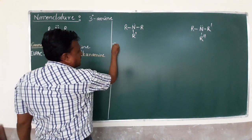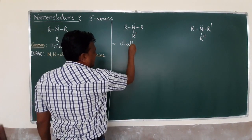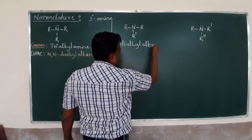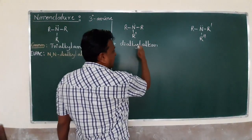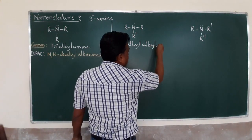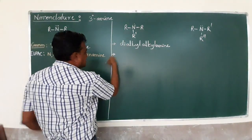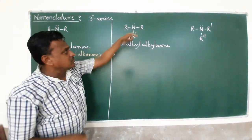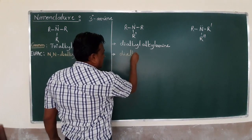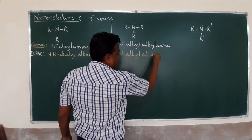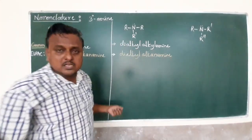When two alkyl groups are the same and one is different, the common name is dialkyl alkylamine. In the IUPAC system, similarly, two of the alkyl groups are the same and the pattern follows N,N-dialkyl alkylamine.